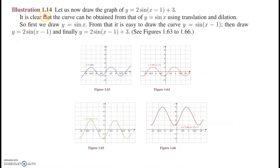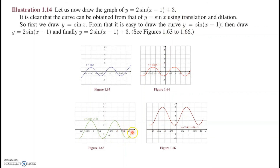In Illustration 1.14, consider y = 2 sin(x−1)+3. Starting from y = sin x, applying sin(x−1) shifts the entire graph. Then 2 sin(x−1) stretches the shifted graph. Finally, adding 3 shifts the graph upward by 3 units. This illustrates combining multiple transformations — translation and dilation — on the sine function.